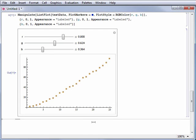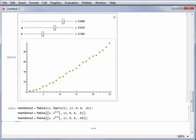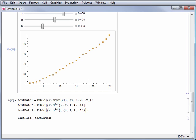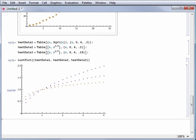Adding and styling additional datasets to your plots requires little additional work. First, define some datasets that you will plot. Here I define testData1, 2, and 3. Then plot the data using ListPlot. You can see that each dataset is plotted together on the same plot.